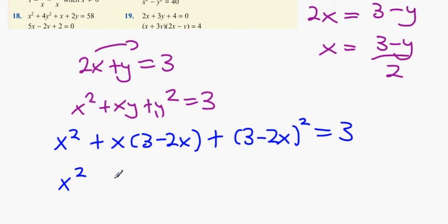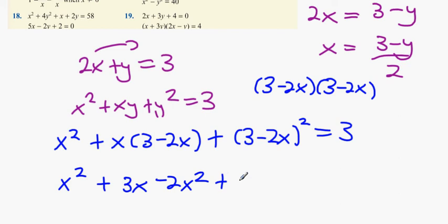We're going to start off. x squared plus 3x minus 2x squared. I'm going to multiply out 3 minus 2x by 3 minus 2x, and I'm going to do it quickly. I'm going to get plus 9. I'm going to get minus 12x, and I'm going to get plus 4x squared. That's when you multiply them out. I'm going to bring the 3 out of the other side. Minus 3 equals 0.